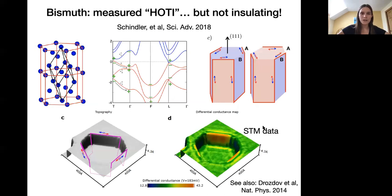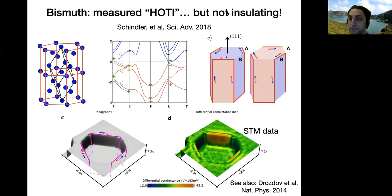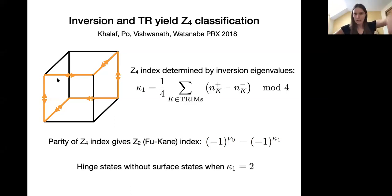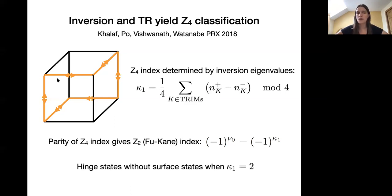A question from chat: could the top and bottom long edge modes be detected by transport? If we make a thin sample of this 3D model, it basically looks like a 2D TI — squishing it down, you see a helical mode on the edge. So in thin samples, not so thin that you ruin the phase, you could see the same transport signatures as for a 2D TI. There may also be something clever in the 3D system to look at transport along a single hinge, though I'm not certain exactly how that would work.